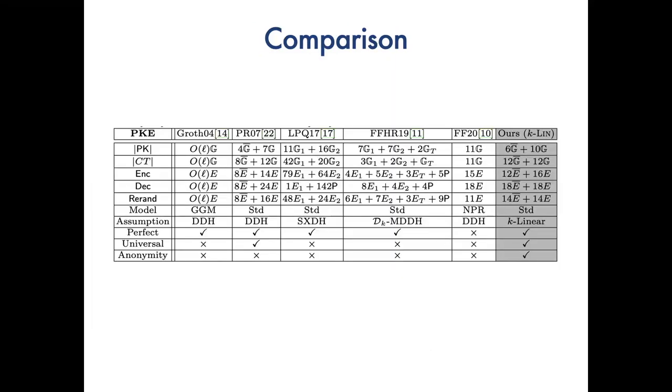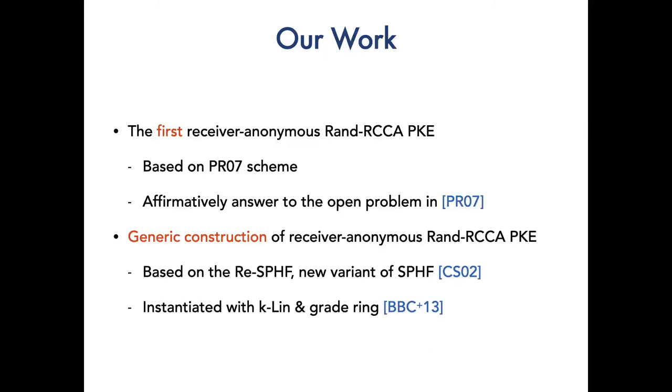In this table, we compare our scheme with previous works. Besides our exclusive property of receiver anonymity, compared with the recent work of Faonio and co-authors, also, our bilinear based instantiation is based on special groups, which are larger than a regular setting. But it does not involve any pairing computations. So in this work, we provide the first receiver anonymous RCCA PKE and resolve the open problem.